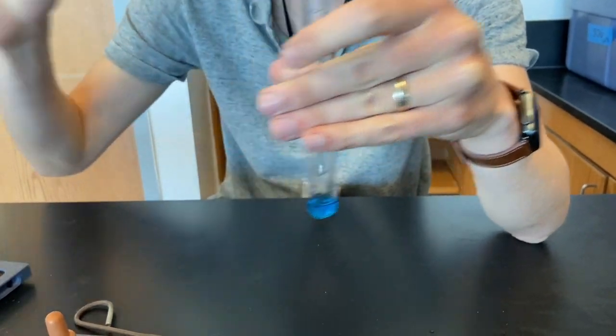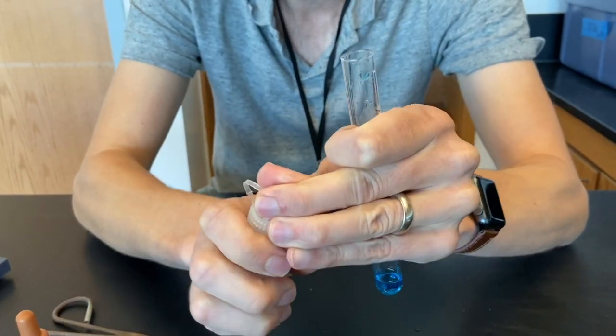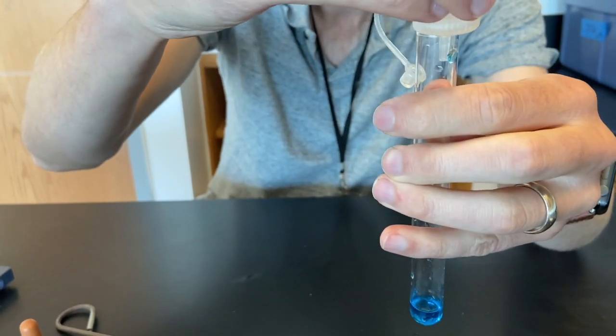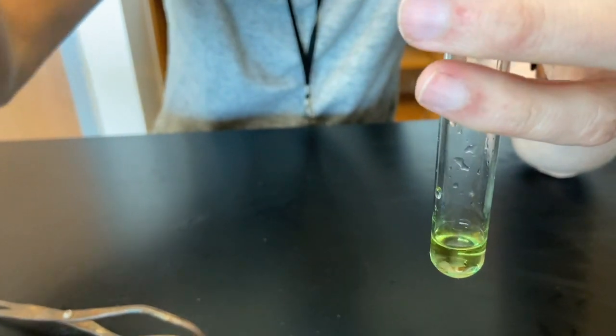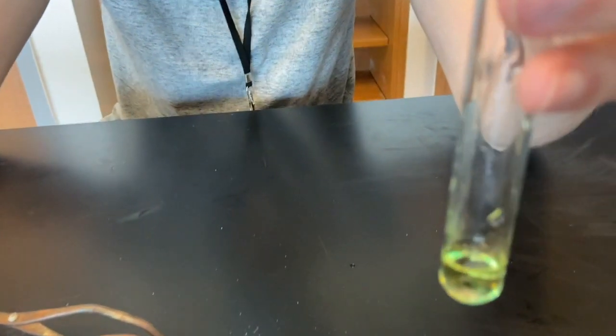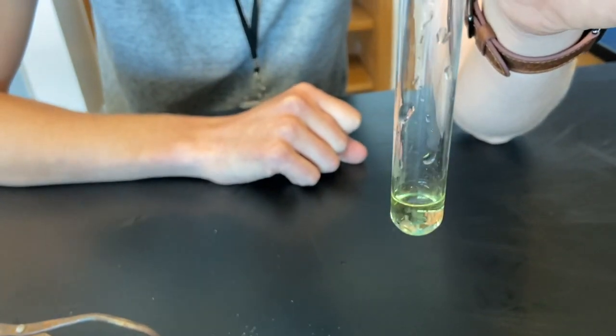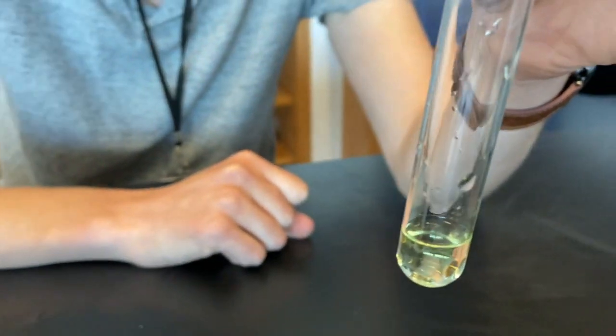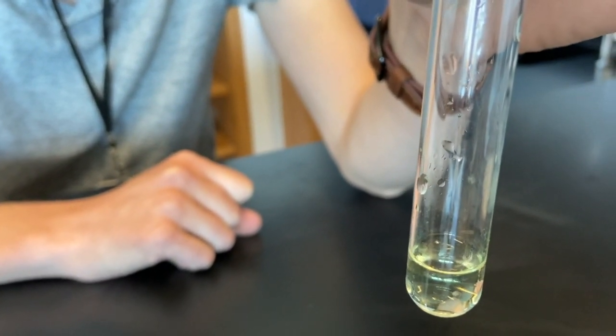Placing those over there, and then we need to add five drops of the hydrochloric acid. Here we go: one, two, three, four, five. Okay, notice the color change. And you want to ask yourself, was that an expected color change or an unexpected color change?